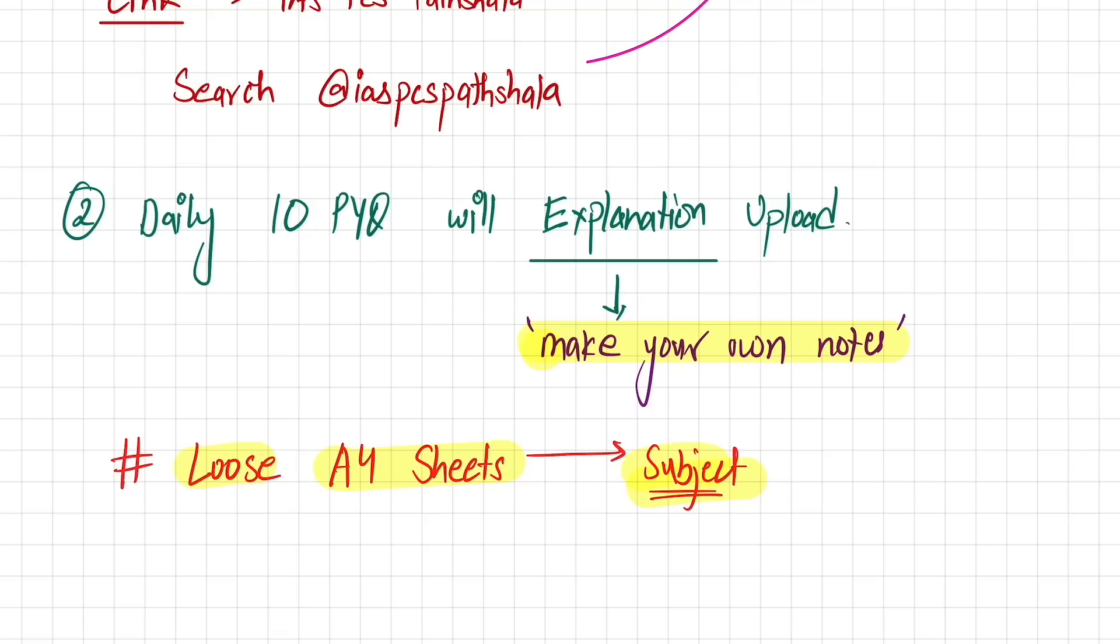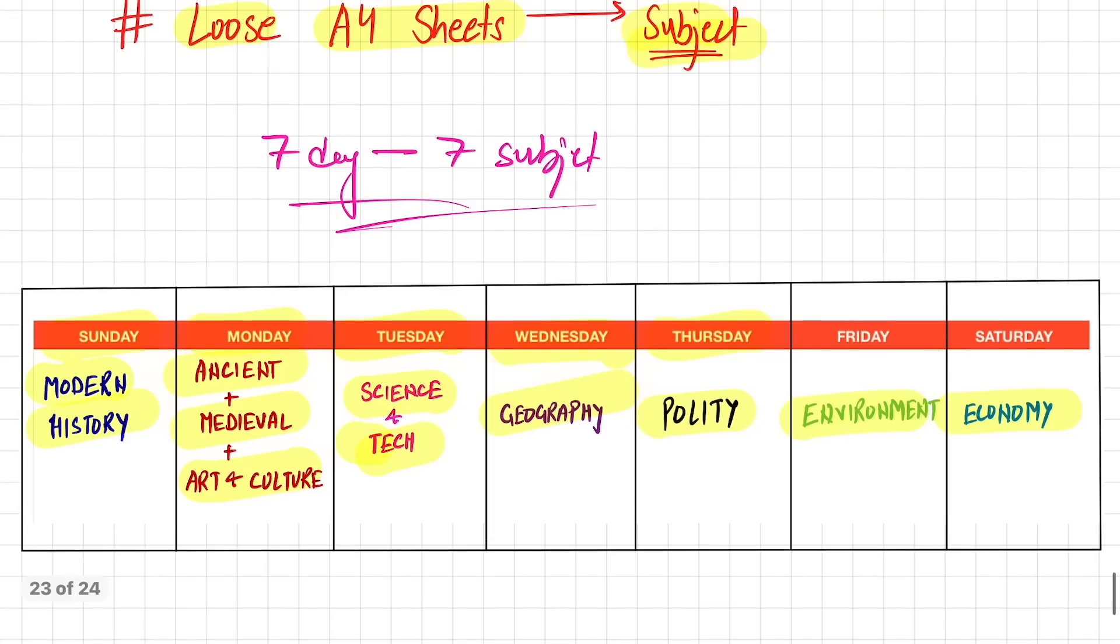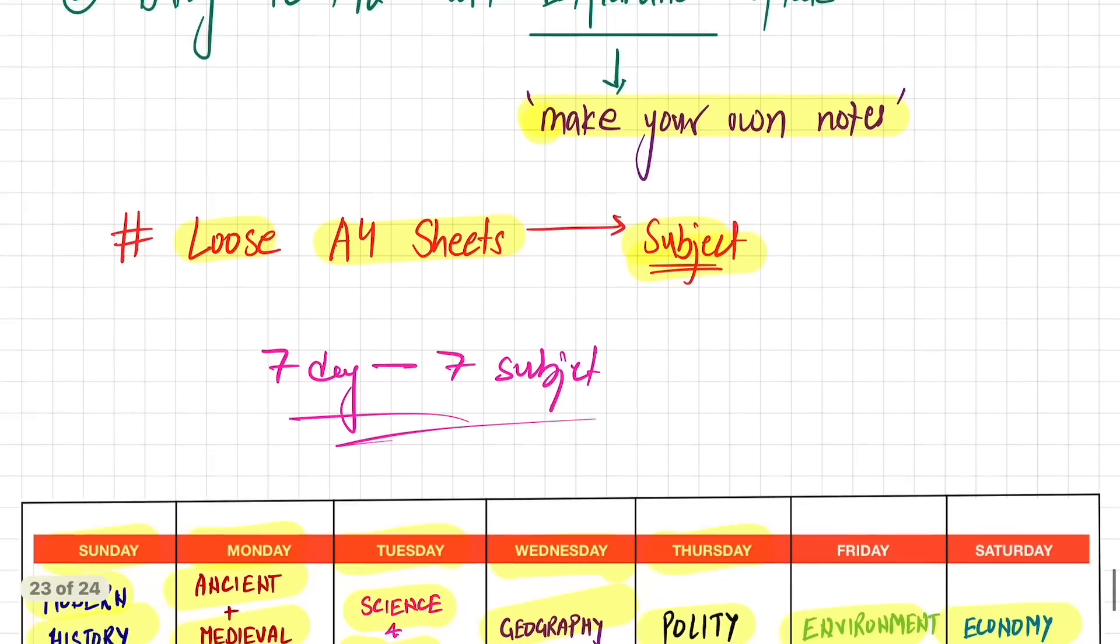First of all, take loose A4 sheets and divide them subject-wise, because every day questions of different subjects will be posted. For example, tomorrow is Thursday, so polity will be posted. After that environment, then economy, then Sunday modern history, Monday ancient medieval art and culture, Tuesday science and tech, Wednesday geography. That means in seven days, seven subjects' MCQs will be completed. And daily you have to do this: whatever question explanations there are, you have to prepare your own notes from them. And how to prepare notes, how to write keywords, let me show you.